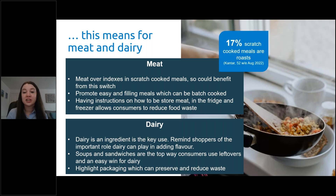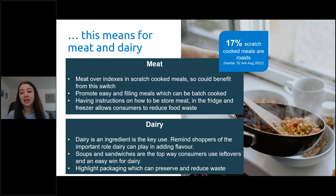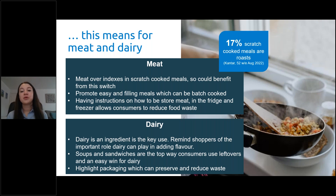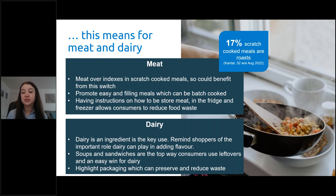Red meat is likely to benefit most from an increase in roast dinners, so we can remind shoppers of how versatile roasting joints are — great for the roast, but then also leftovers and sandwiches. For pork and lamb, roasting joints can be really cost effective as they have a lower price per kilogram than many other primary cuts within those proteins. Innovate with other recipes which can meet the needs of being easy and filling, and which can be batch cooked. Food waste is a huge concern, so highlighting how best to store products, and we think that freezability instructions might become increasingly important to consumers.